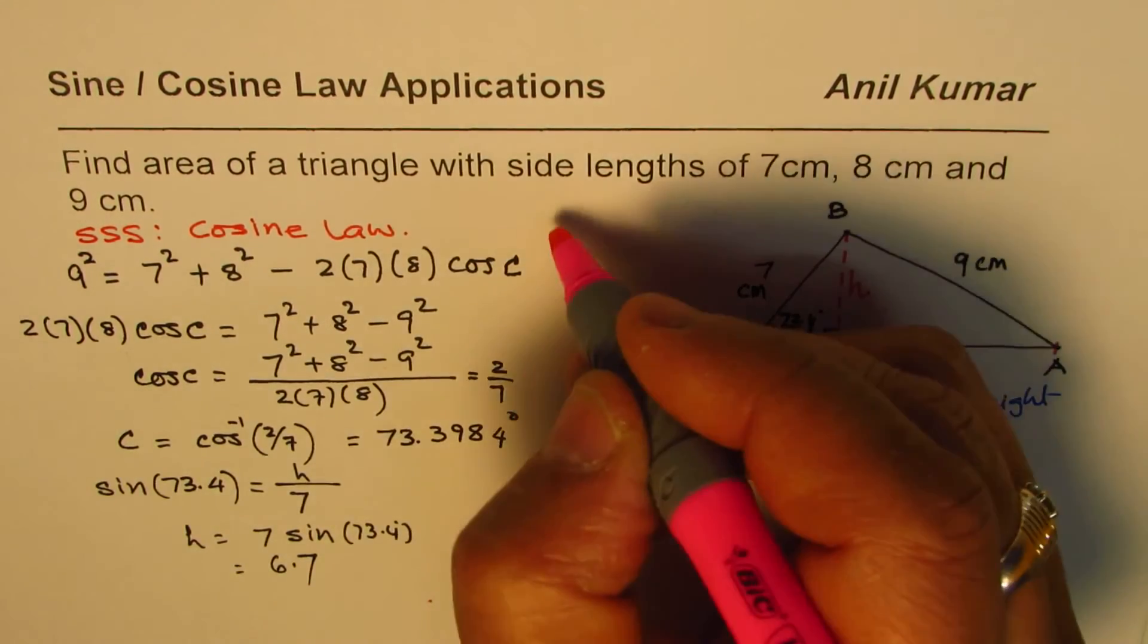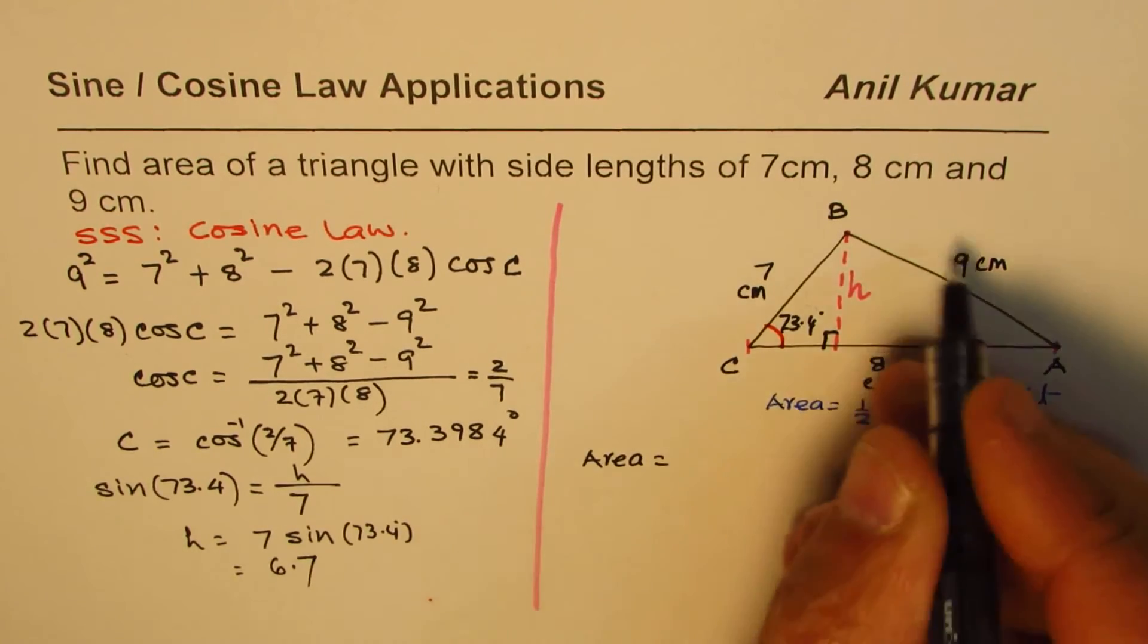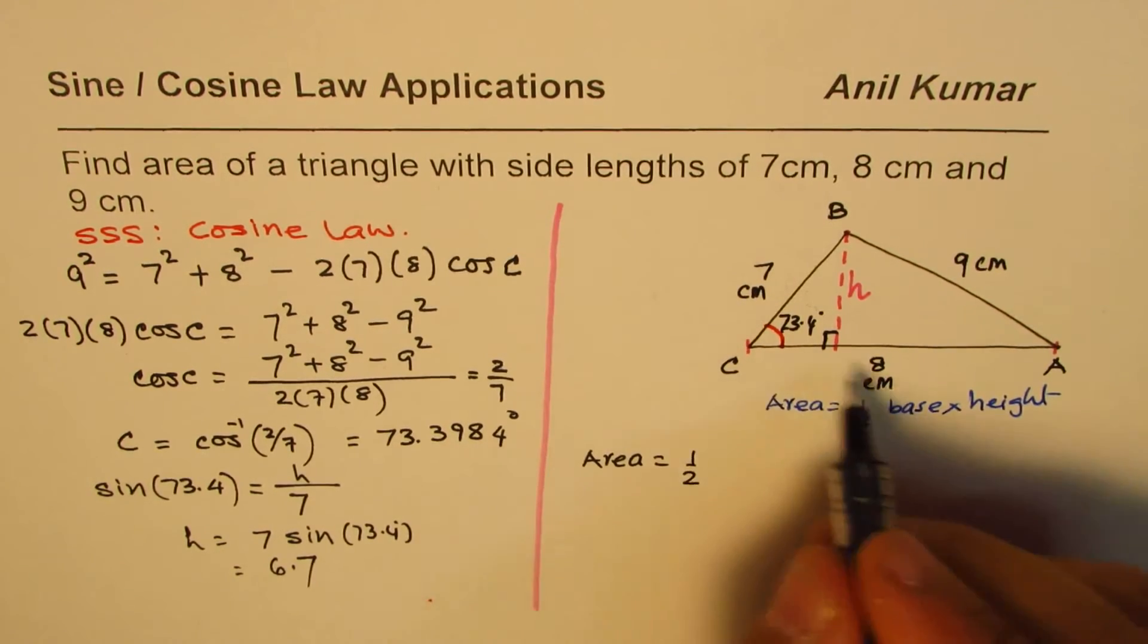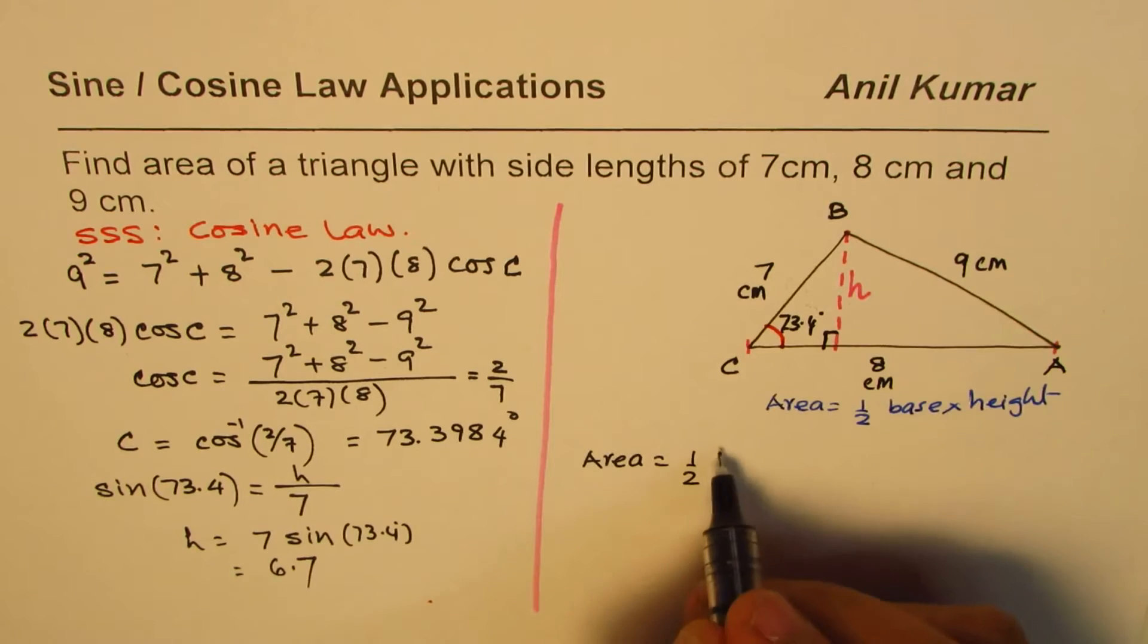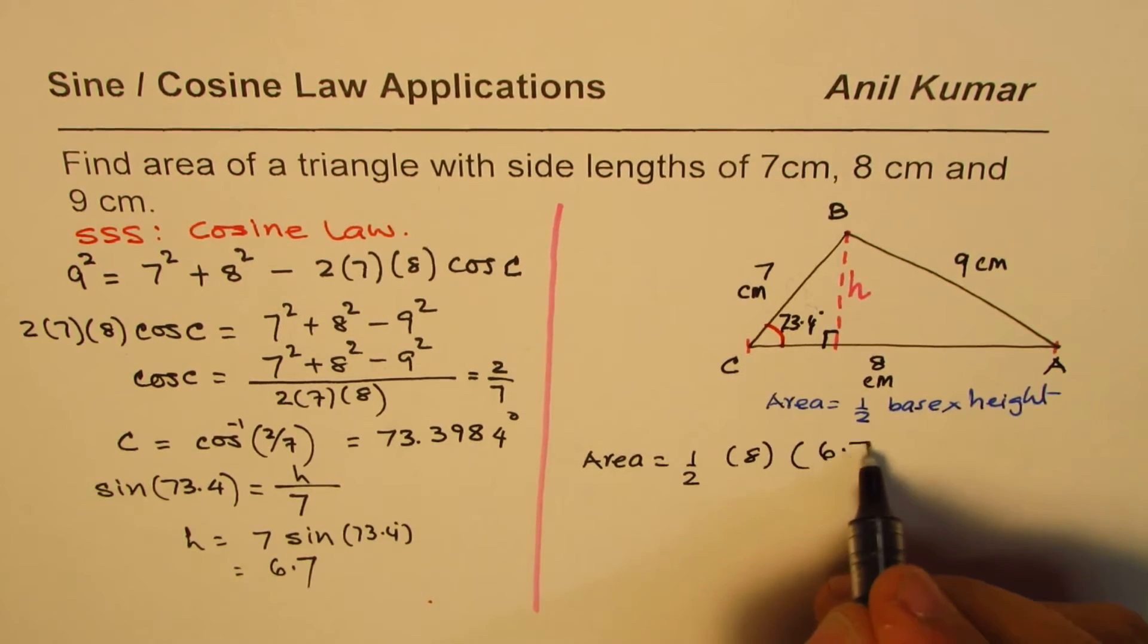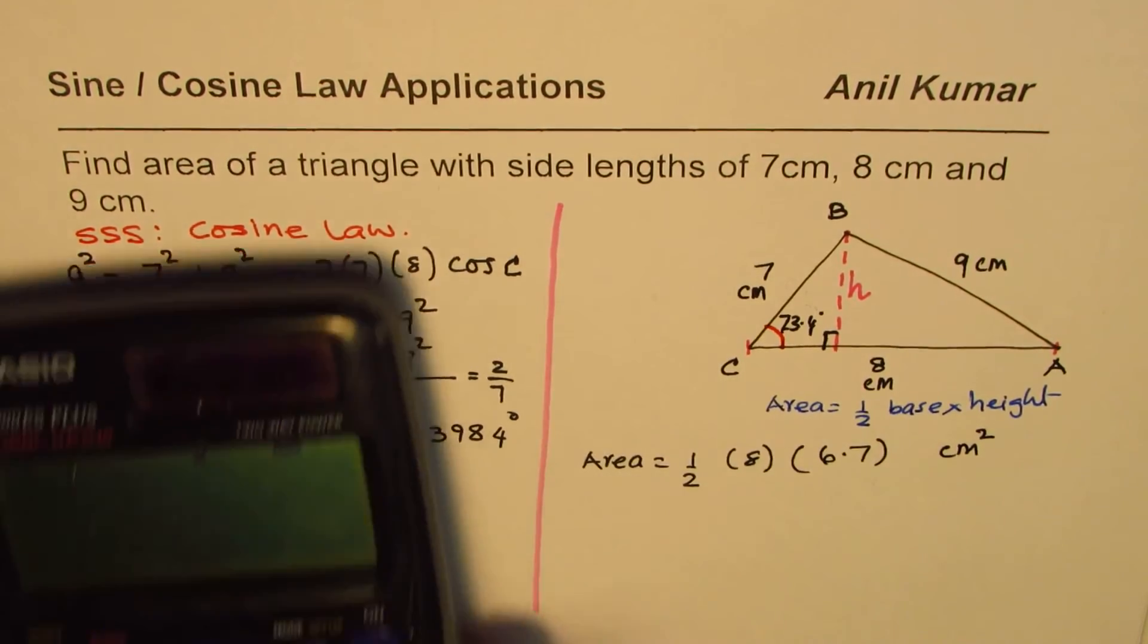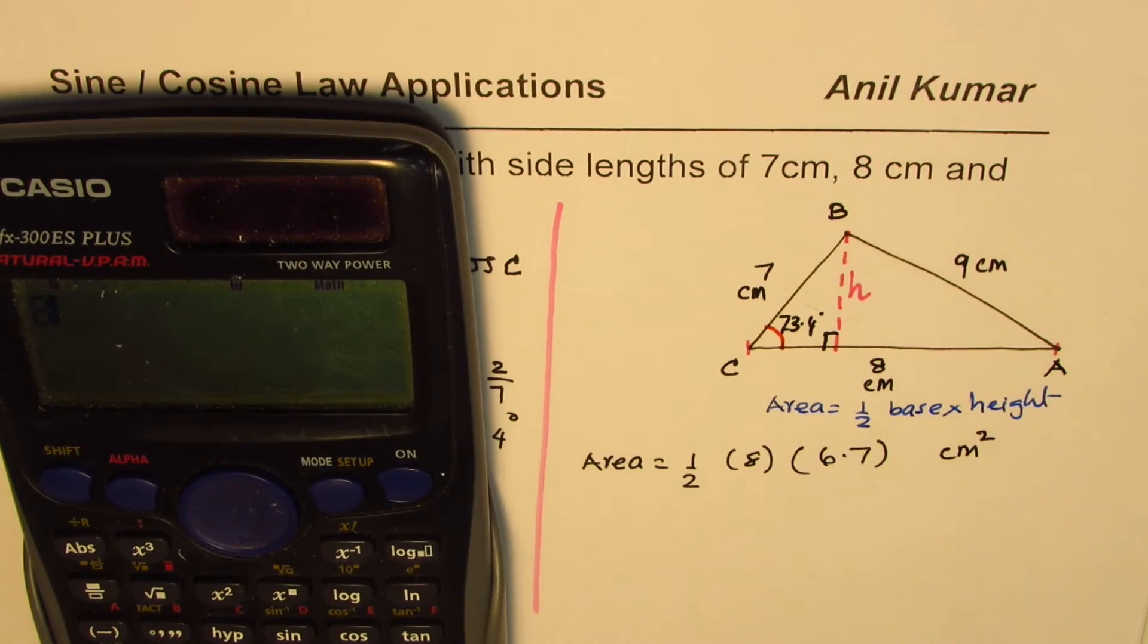Okay, so now we know the height. Since we know height, we can always use the formula and calculate the answer. So we have area of this triangle as half of base, which is 8, times height, which is 6.7. The units will be centimeters square.